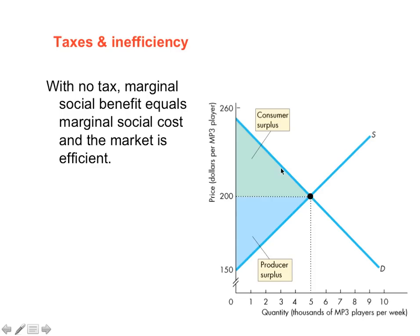The area which is below the demand function and above the equilibrium price is your consumer surplus. Consumer surplus arises because the demand function measures the willingness to pay of a consumer. If a consumer is willing to pay $250 but only has to pay $200, which is the market price, then the difference between the maximum he's willing to pay and the market price is the consumer surplus — true for the whole demand function lying above the market price.